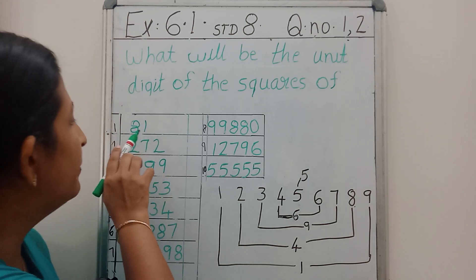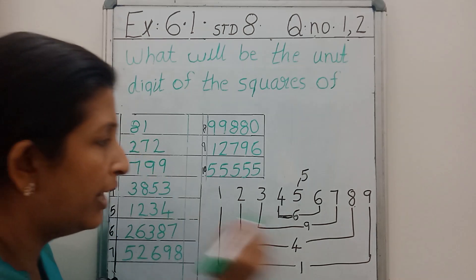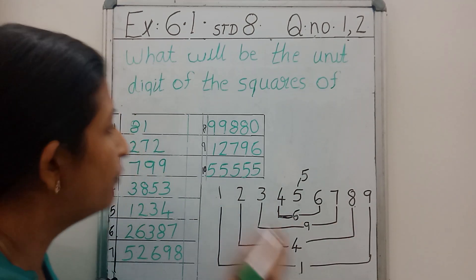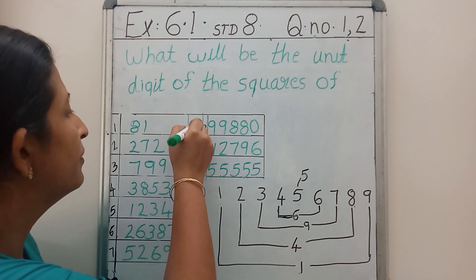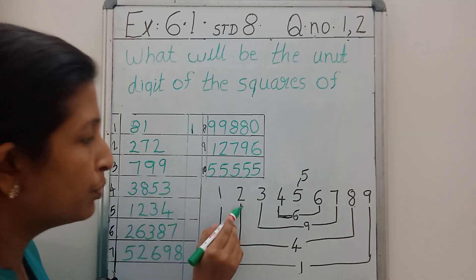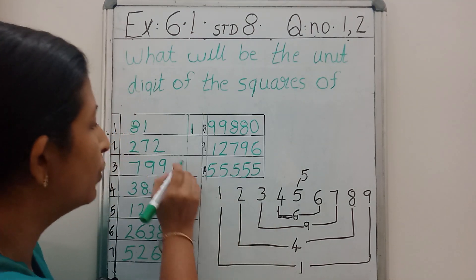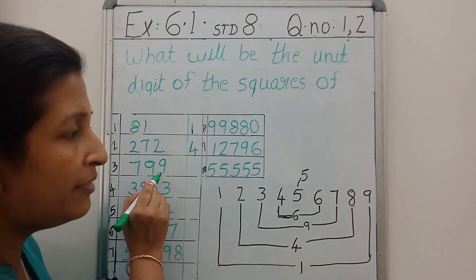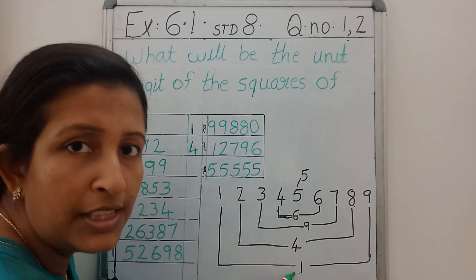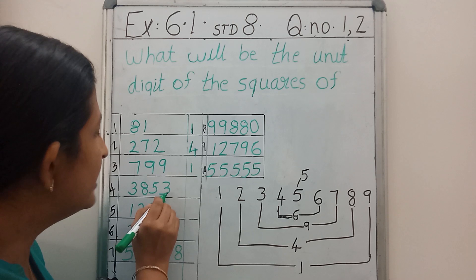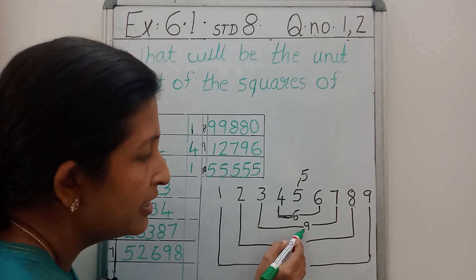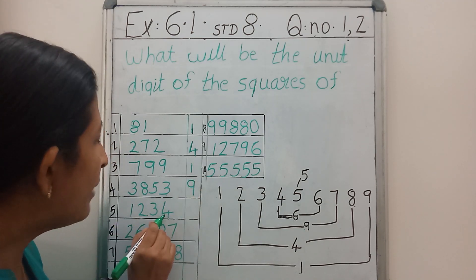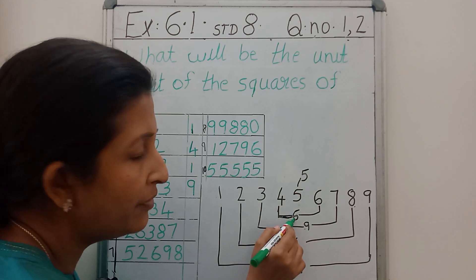The first number is 81 and it is ending with 1. If the number is ending with 1 or 9, the square should end with 1, so our answer is 1. The next number is ending with 2, so the square should end with 4. The next number is ending with 9, so the square should end with 1. The next number is ending with 3, so the square should end with 9. This number is ending with 4, so the square is ending with 6.